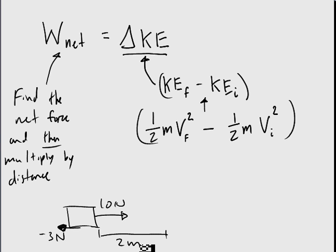Well, the net force is going to be adding the two. So it's 10 plus negative 3. So the net force is equal to 7 newtons in this direction. And if we're doing that over 2 meters, which is also in that direction, then we'll know that the work...